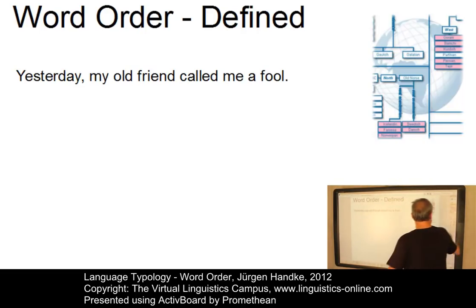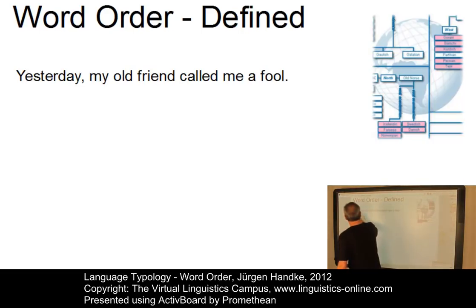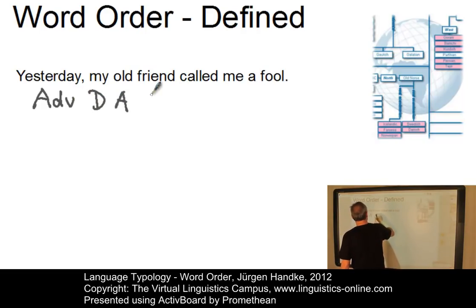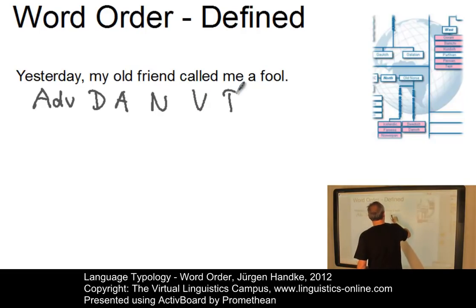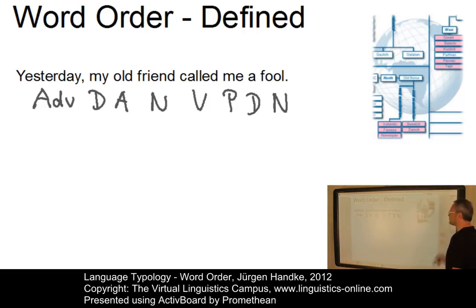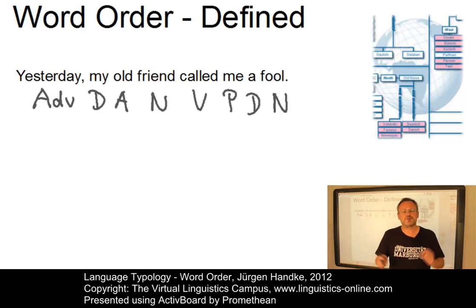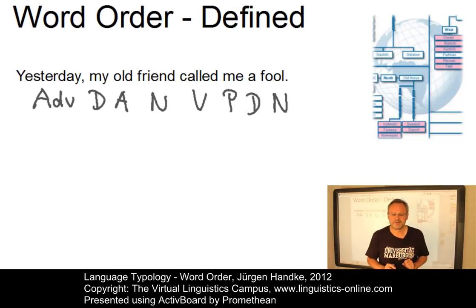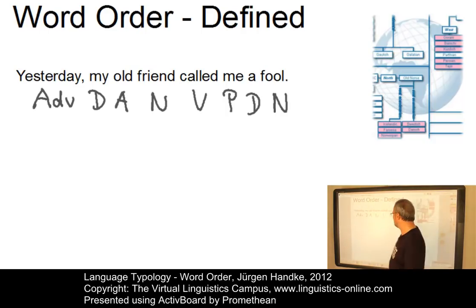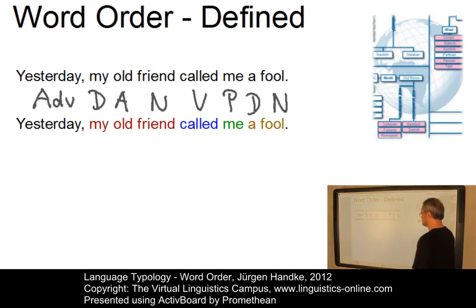In this example, the order of the words would be: adverb, determiner, adjective, noun, verb, pronoun, determiner, and noun. However, in looking at each category, too many possibilities would emerge and too few generalizations across languages could be made. Thus, word order is not defined as the ordering of the words within a sentence, but as the ordering of the functional elements within a sentence.